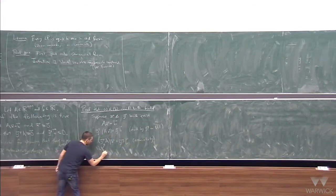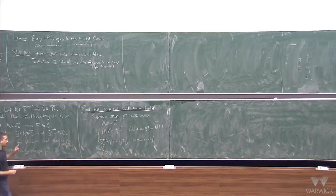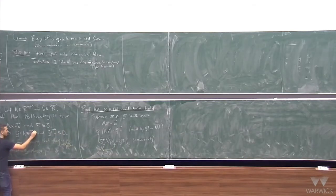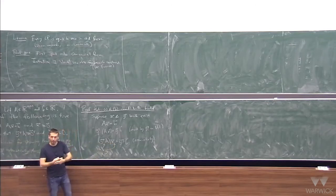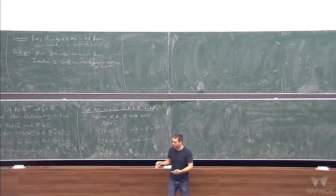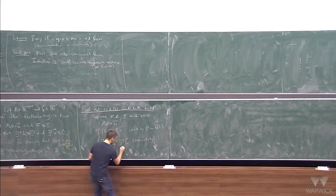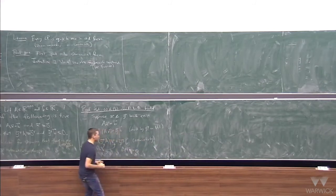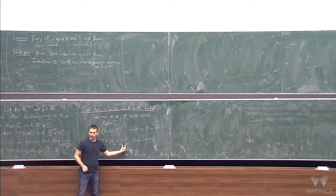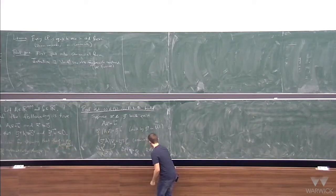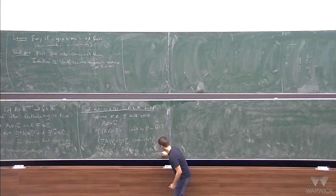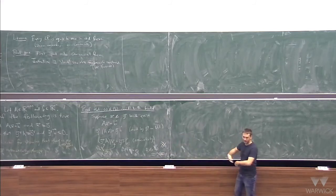So Y^T A is a non-negative row vector, and X is a non-negative column vector. When you take their dot product, you take a bunch of non-negative numbers and add them up, so the left-hand side is a non-negative real number. The right side is Y^T B, which is a negative real number, because property B said this is negative. So the right-hand side is less than zero, and that's a contradiction — you can't have a non-negative number equaling a negative number.